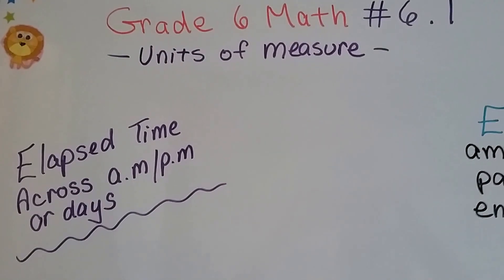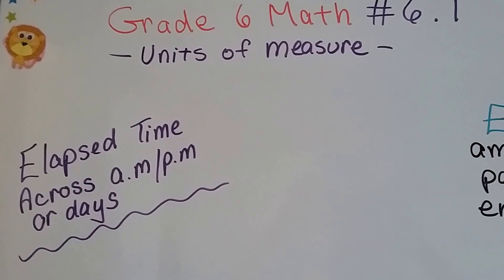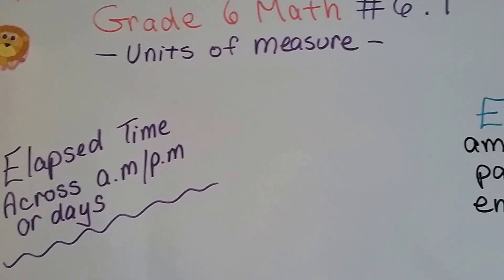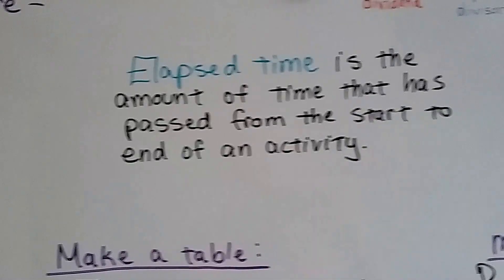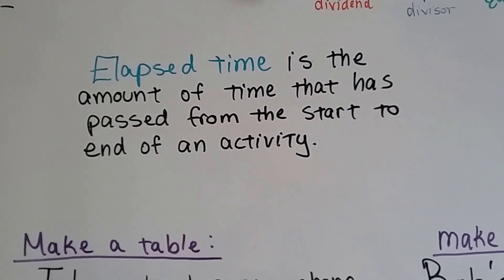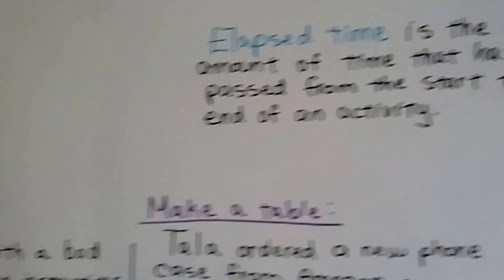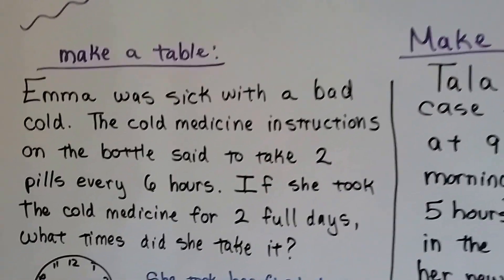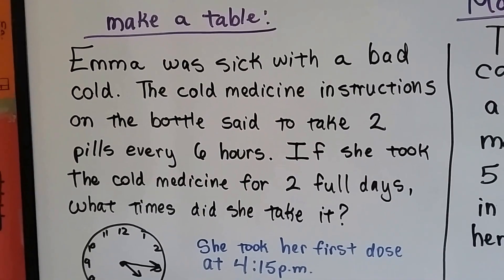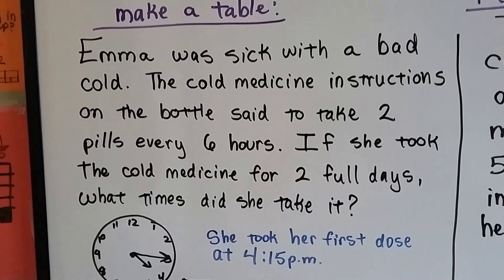Grade 6 math number 6.1: elapsed time across a.m., p.m., or days. Elapsed time is the amount of time that has passed from the start to the end of an activity.